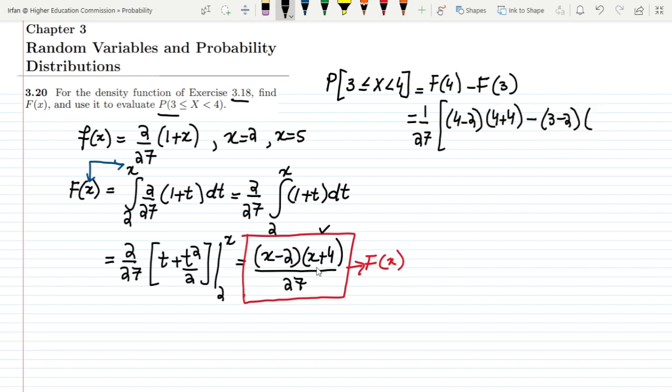Similarly subtracting it from the lower limit which would become here 3 minus 2, and also x plus 4 that is 3 plus 4. So now let me simplify it and here I will get 4 minus 2 is 2, 2 multiplied by 8 is 16. Here I will get 16 and here I will have 3 minus 2 is 1, so 7 multiplied by 1 is 7.